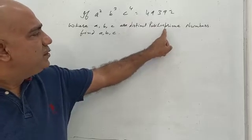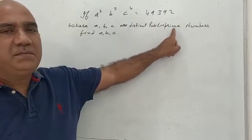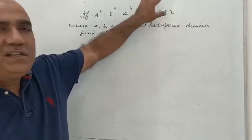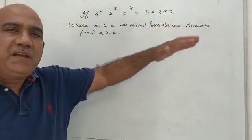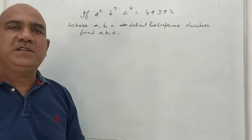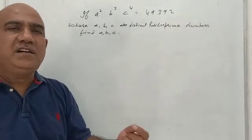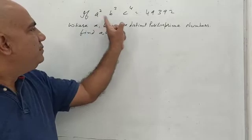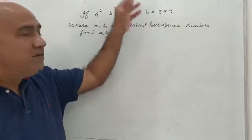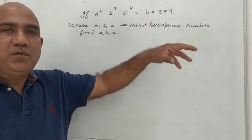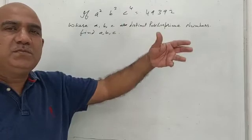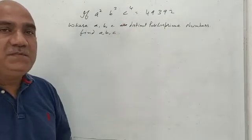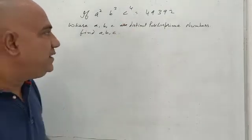Another important thing is that these are prime numbers. So what we do is make prime factors of the given quantity — you will undoubtedly get a, b, and c as the factors. By looking at the powers of those prime factors, we will be able to identify which one is a, which one is b, and which one is c.